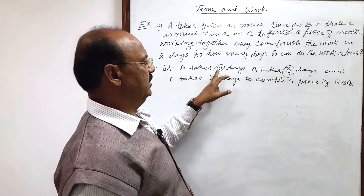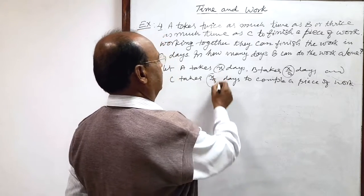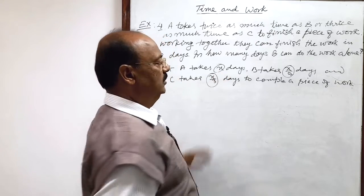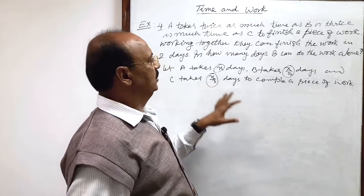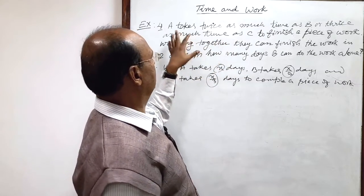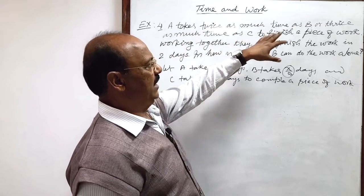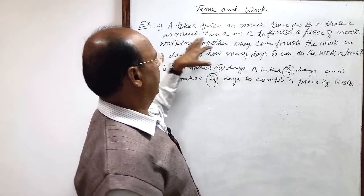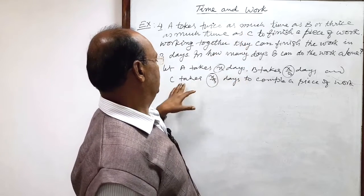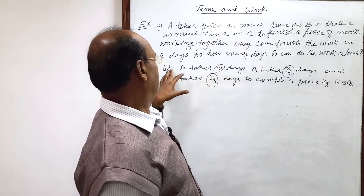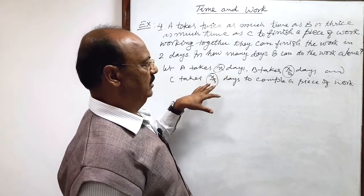Similarly, x is three times of x by three, which is the time C takes to complete the work. So the condition is fulfilled that A takes twice as much time as B or thrice as much time as C, because if C is taking x by three days, A is taking x, which is three times of x by three.